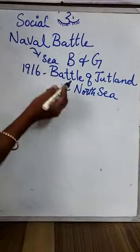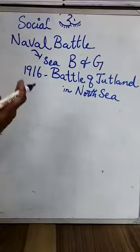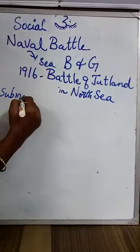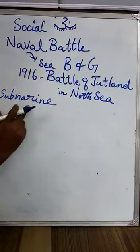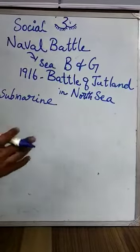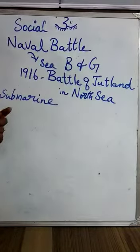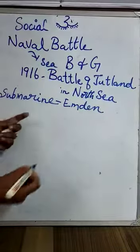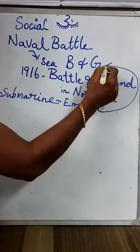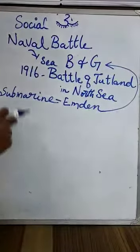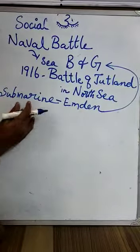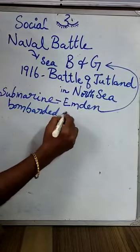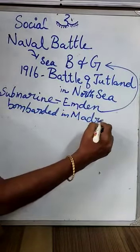At that time Germany could not tolerate the situation, so Germany took a submarine. The submarine's name was Emden. Emden is a submarine name which belonged to Germany. When it went as a submarine, it bombarded in Madras.